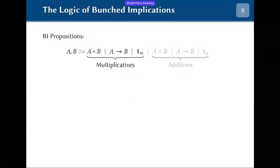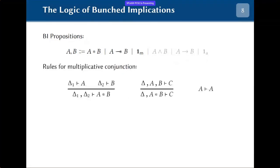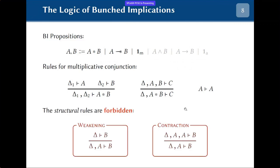For the moment I want to focus on the multiplicatives. Here I'm showing a sample of the rules for conjunction, and they work as you may expect. For example, to prove that A star B is true, we need to prove that A is true and that B is true. The big twist, however, is that we are forbidden from using the so-called structural rules — weakening and contraction. Weakening is the rule that allows you to discard a hypothesis if you find out you don't need it, and contraction is the one that allows you to duplicate a hypothesis if you need it more than once.